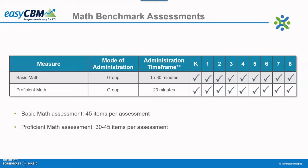An alternative to the proficient math assessment is the basic math assessment, which contains about 45 items that assess specific standards per grade level. This assessment is designed for those students scoring in the lowest 20% on classroom math assessments. Though both assessments are available for paper-pencil administration, online administration is recommended. Benefits include instant scoring and immediate results. Separate norms are provided for the benchmark and progress monitoring forms of the math measures.